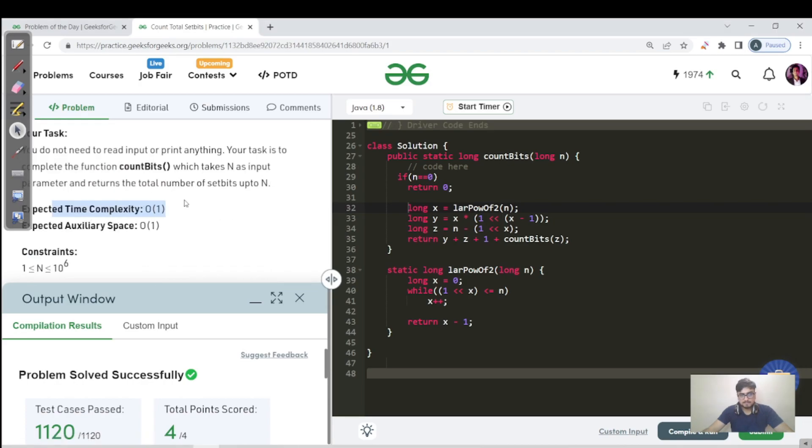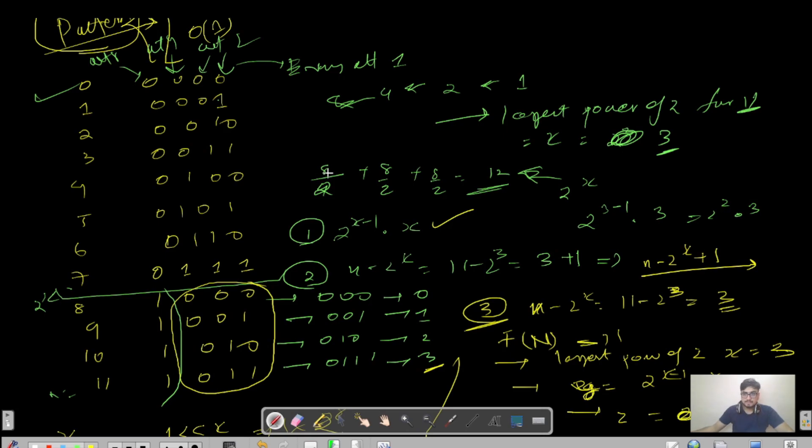The time complexity we achieved is log n, but the expected is O(1). Can we further optimize it? That would be homework for you. I can do it but won't show you. I'll just give you an intuition. We need to work with the same pattern we observed but eliminate the repeating steps, specifically calculating the largest power of 2. The same pattern is there: for each pair of 2 you have one set bit, for each pair of 4 you have 2 set bits in the third last column, for each pair of 8 you have 4 set bits. You need to leverage this pattern and code this approach yourself.